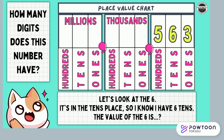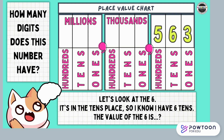How many digits does this number have? 3 — that's right. Let's look at the 6. It's in the tens place, so I know I have 6 tens. The value of the 6 is? Think, then respond. 60 — that's right. You can say 6 tens or 60.